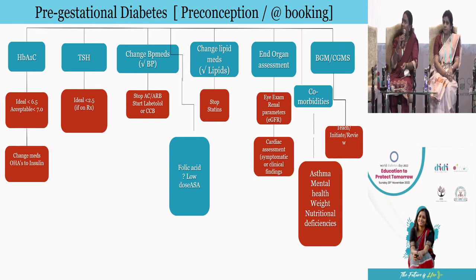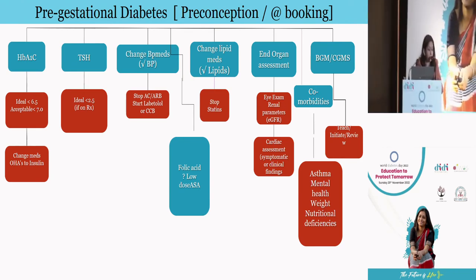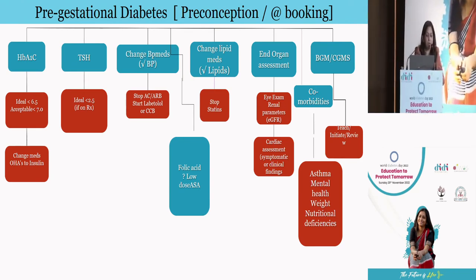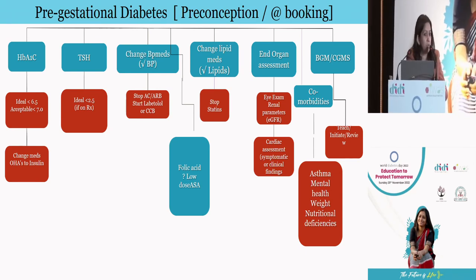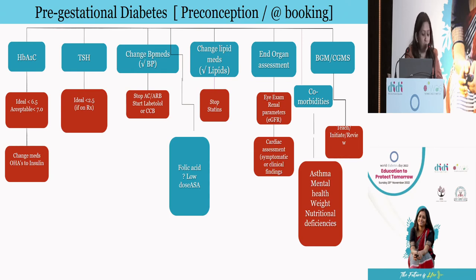Especially regarding retinopathy, we know it progresses during pregnancy. If the lady already has proliferative retinopathy, it should be treated before she conceives. Even with moderate to severe retinopathy, we should be careful about achieving strict glycemic control suddenly, because that might worsen the retinopathy. We need to be very careful with both retinopathy and nephropathy.